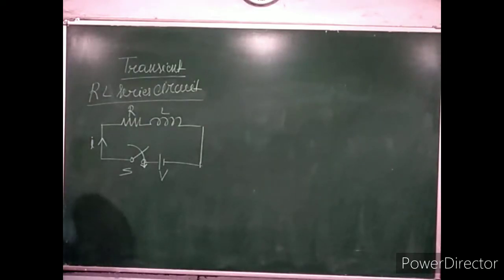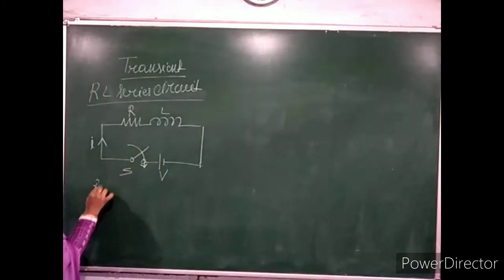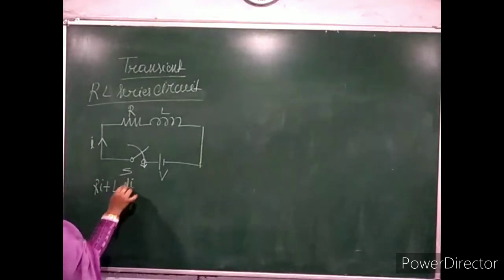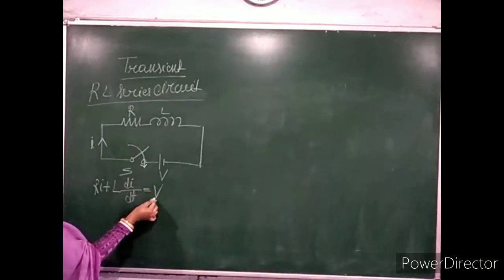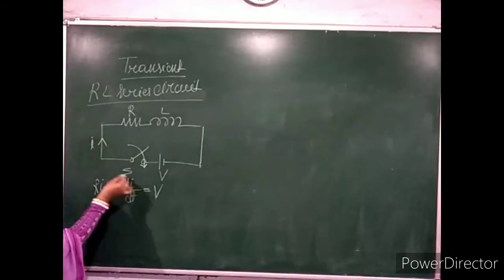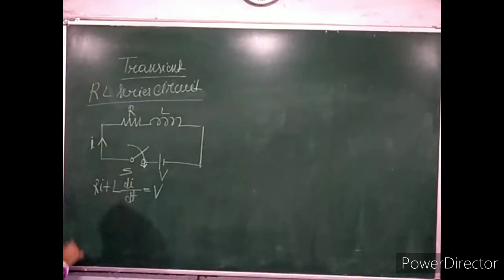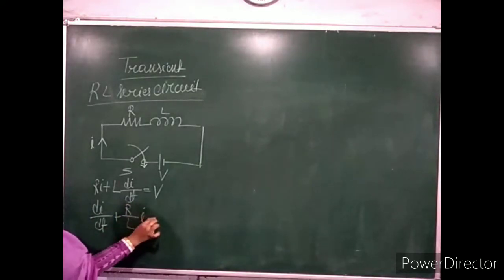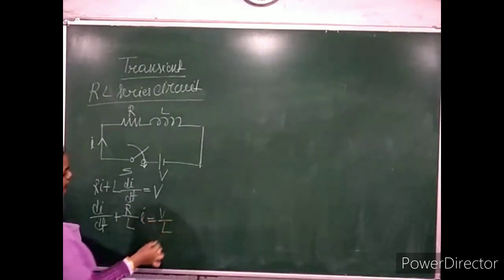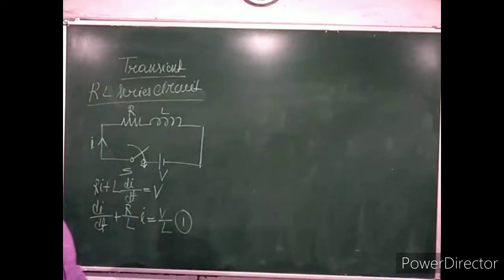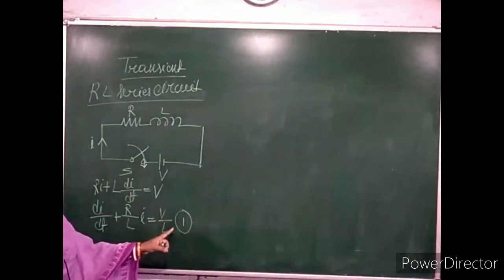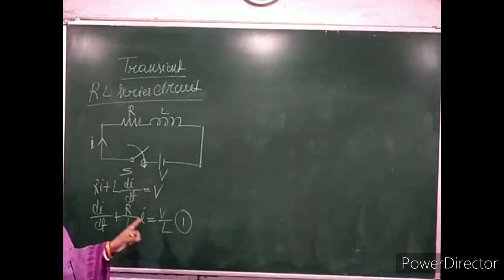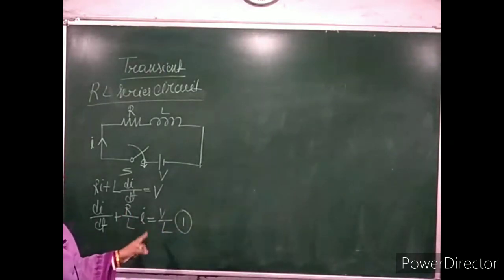According to Kirchhoff's voltage law, the voltage equation of this circuit is: R·I + L·di/dt = V. The supply voltage equals the voltage across the inductor plus the resistor. This equation can be rewritten as: di/dt + (R/L)·I = V/L. Take this as equation number 1. It represents a linear differential equation in the form of a non-homogeneous equation.